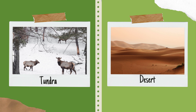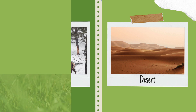Coming to the fourth one, desert. A desert is a barren area of landscape where little precipitation occurs and consequently living conditions are hostile for plants and animals' life.